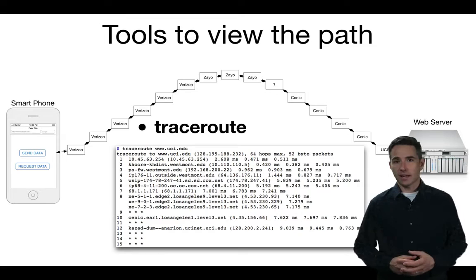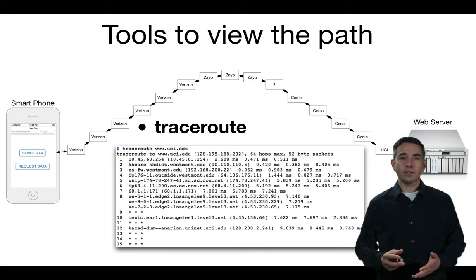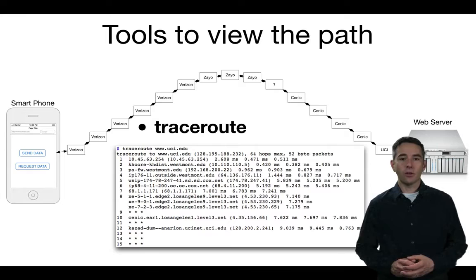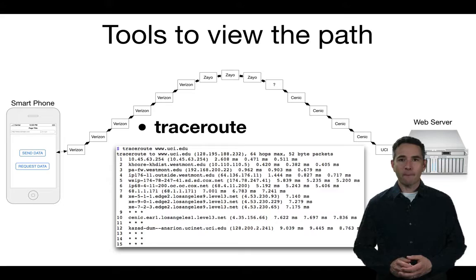There are web services that allow you to run traceroute, but typically those services trace the route from the web server to the destination, not from your computer. In this example, I'm executing a traceroute command to find all the computers along the way between my current location and UCI. You can see several of the server names along the way — of interest, number 12, UCI's firewall, is called 'Caradhras,' which is a reference to Lord of the Rings.